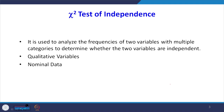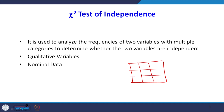Now we go to today's topic: the test of independence. This test is used to analyze the frequencies of two variables with multiple categories to determine whether the two variables are independent or not. Whenever there are qualitative variables or nominal data, we use the test of independence. We use a contingency table, which has values in rows and columns, and we test whether these are dependent or independent.